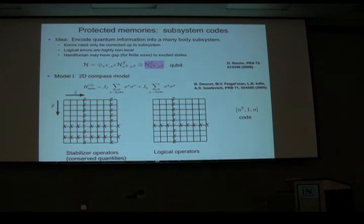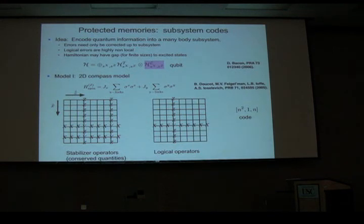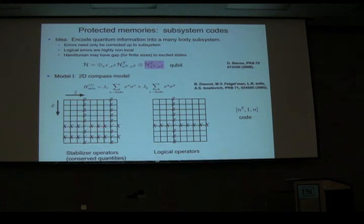Your Hilbert space splits up so that one factor corresponds to a subsystem where you can encode information. A particularly nice realization of this is described by the 2D compass model, where you have spins on the vertices of a lattice with XX interactions along the X direction and ZZ along the Z direction. You have a set of conserved quantities corresponding to pairs of strings of Z operations.